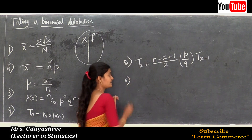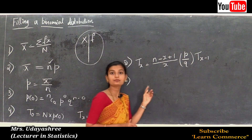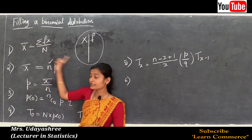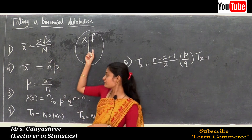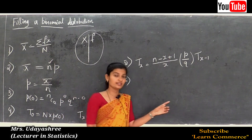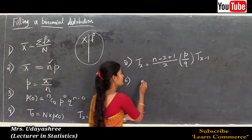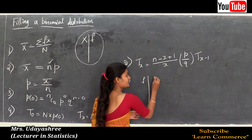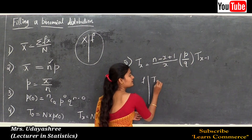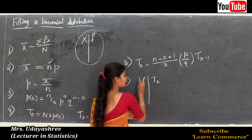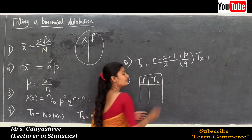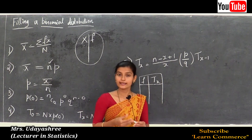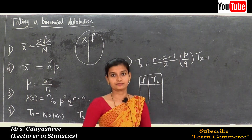Step 6 is to write both the observed frequency and the theoretical frequency in a table so that an easy comparison can be made between the observed and theoretical frequencies.